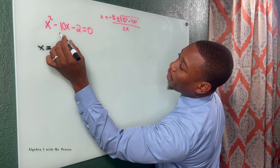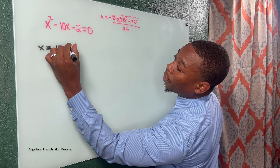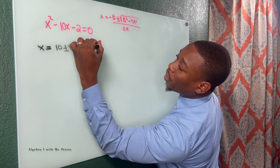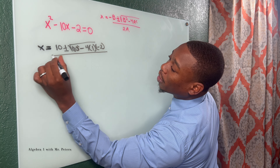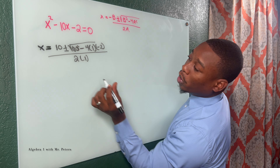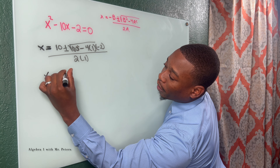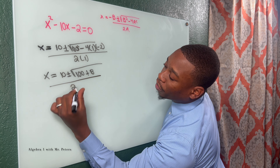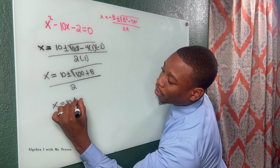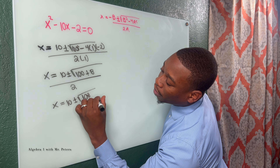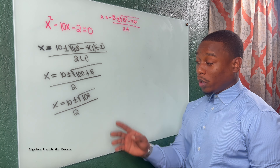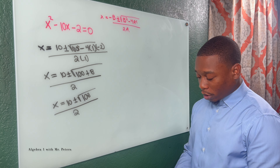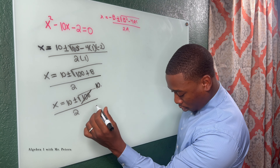Another method for factoring quadratics is using the quadratic formula, which works with any quadratic as long as it's in standard form and you correctly plug in. For our first example, x equals the opposite of b — b is negative ten, so it becomes positive ten — plus or minus b squared, so ten squared, minus four times a, which is one, times c, which is negative two, all over two times a. Simplifying: x equals ten plus or minus the square root of one hundred plus eight, all over two. So x equals ten plus or minus the square root of one hundred eight over two.